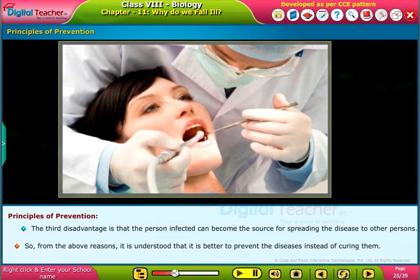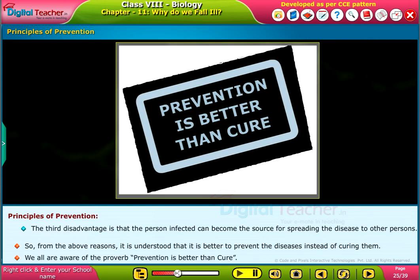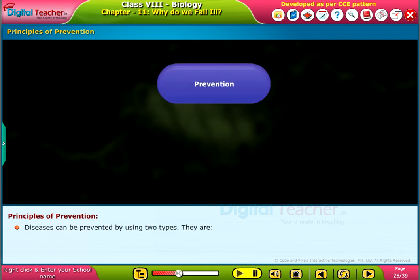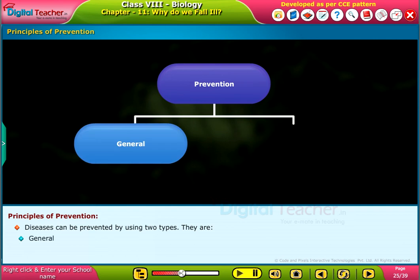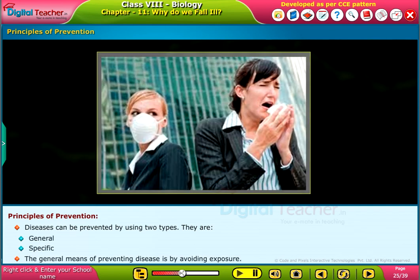From the above reasons, it is understood that it is better to prevent diseases instead of curing them. We all are aware of the proverb: prevention is better than cure. Diseases can be prevented by using two types of means — general and specific.